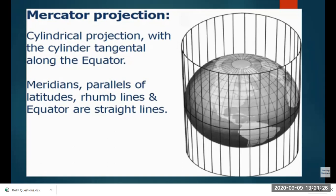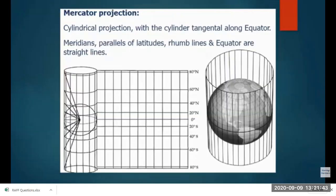In the Mercator chart, meridians, parallels of latitude, rhumb lines, and the equator are all straight lines at right angles to each other — unlike a gnomonic chart. The equator and parallels of latitude are horizontal straight lines, and longitudes are at 90 degrees to them.